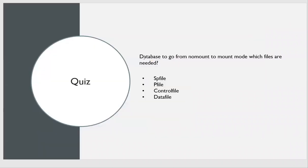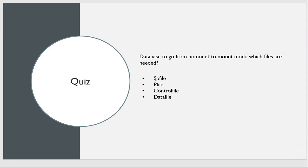Quiz time: to go from no-mount to mount mode, which file is needed? The options are SPfile, Pfile, control file, or data file. Think about it — SPfile and Pfile are needed from shutdown to no-mount. From no-mount to mount, we need the control file. The answer is: control file.